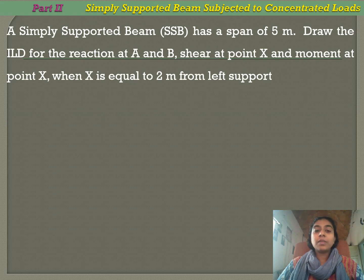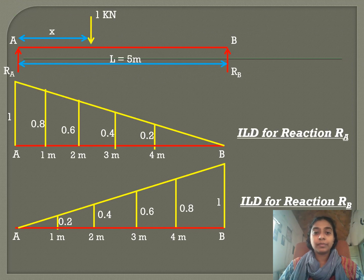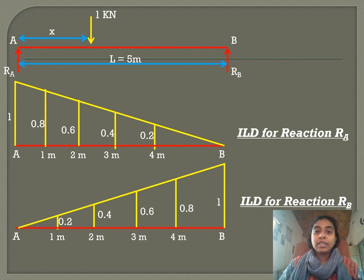The problem is: a simply supported beam has a span of 5 meters. Draw the influence line diagram for reaction A and B, shear at point X, and moment at point X, when X is equal to 2 meters from the left support. This involves a single concentrated load of 1 kilonewton.